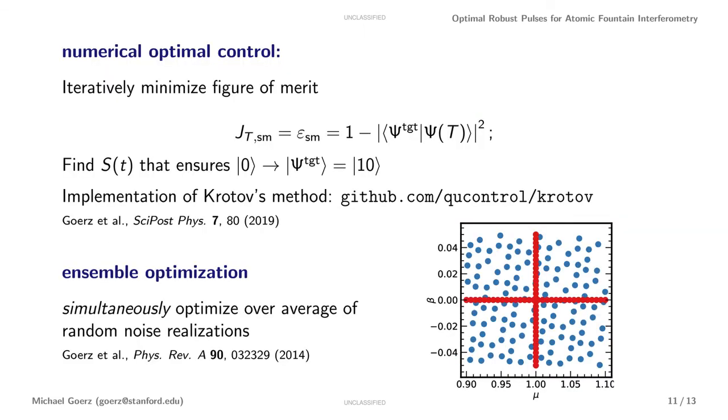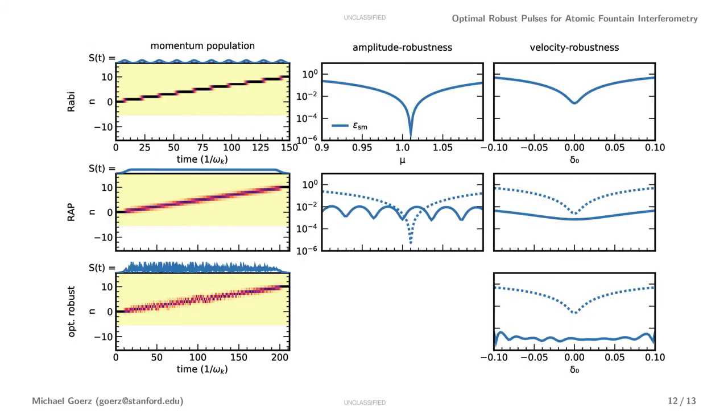We can also look at an ensemble of variations just over the initial velocity. And there we also find that we can achieve complete robustness and several orders of magnitude improvement in the transfer fidelity.